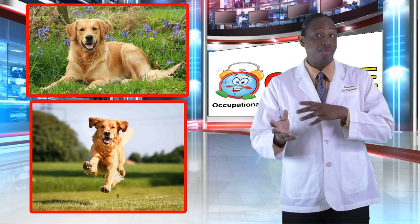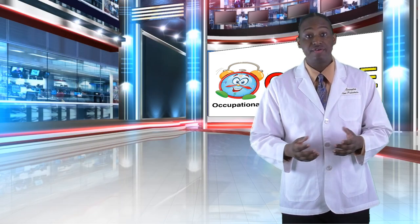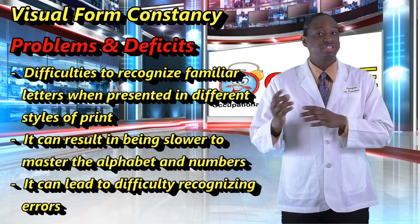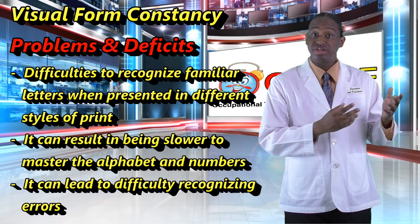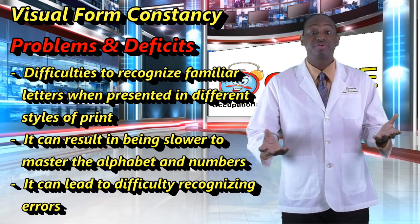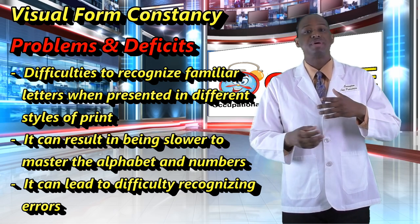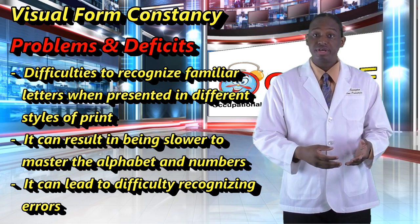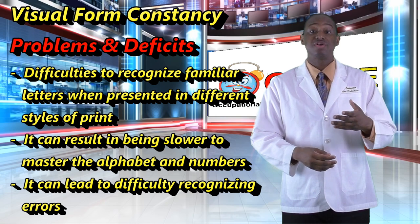Deficits in visual form constancy can cause difficulties in a number of areas. It would make reading difficult as a child might not recognize familiar letters when presented in different styles of print — so if the font, size, or color is different, they may have difficulties. It can result in being slower to master the alphabet and numbers, and it can lead to difficulty recognizing errors in written work.